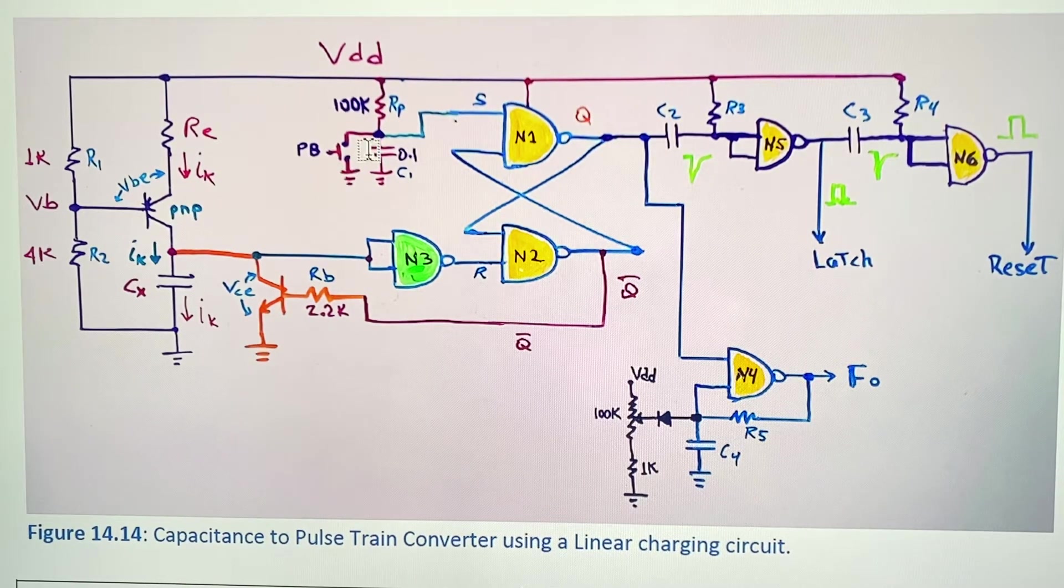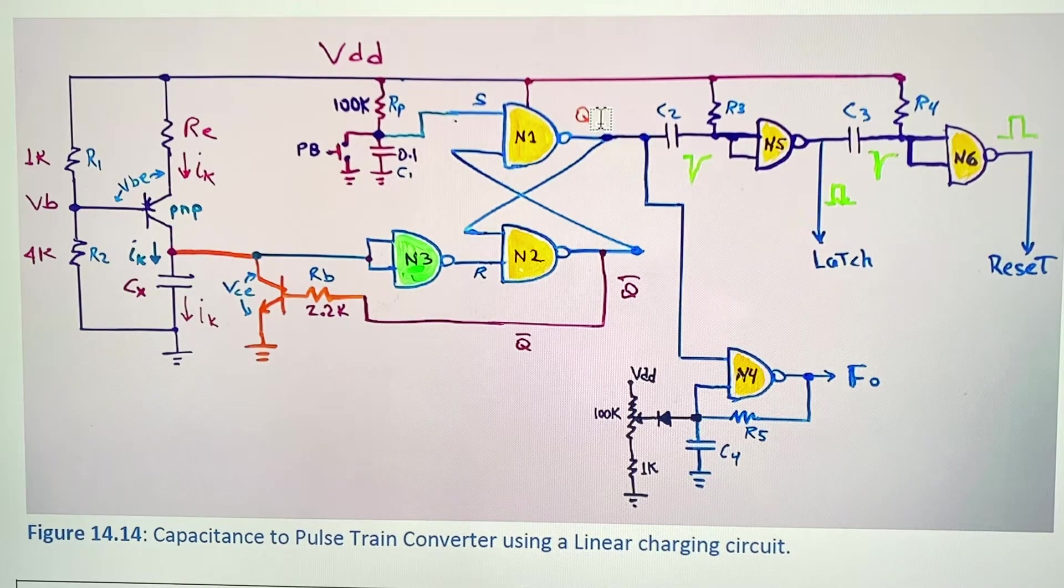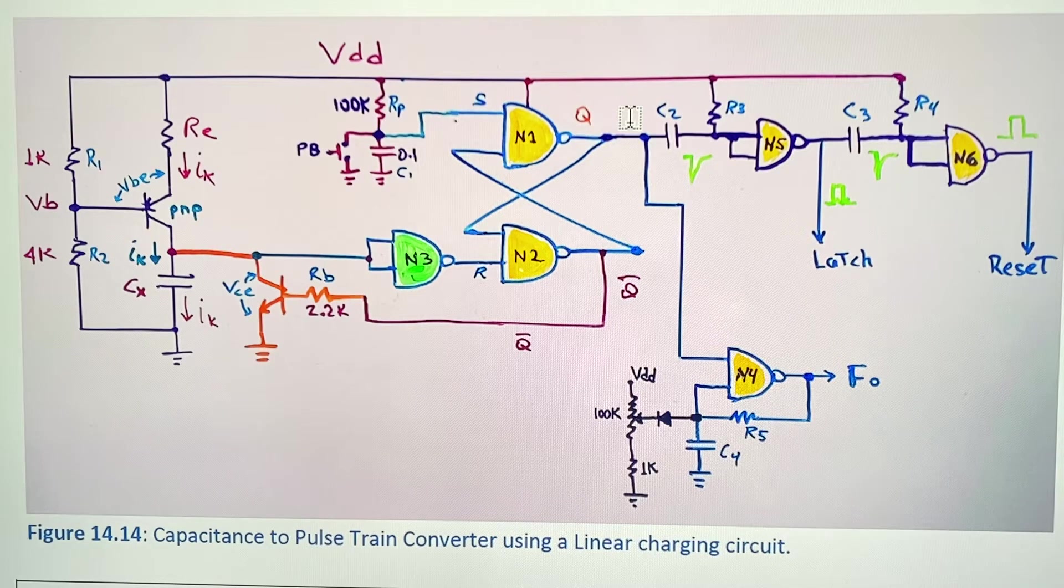You press the push button and you will get a pulse on the Q output and that pulse will be proportional to the value of CX.